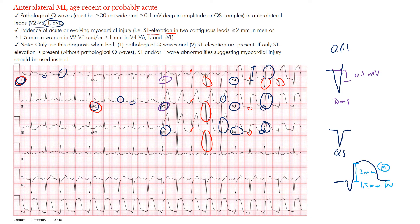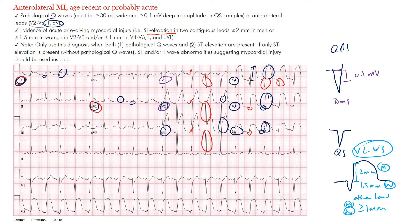In V2 and V3, you need at least 2 mm in men and 1.5 mm in women. In the other leads, you need at least 1 mm in men and 1 mm in women. Note that V2 and V3 are where we tend to see early repolarization, which is not always a benign finding. We only make the MI diagnosis when both pathological Q waves are present and ST segment elevation is seen.